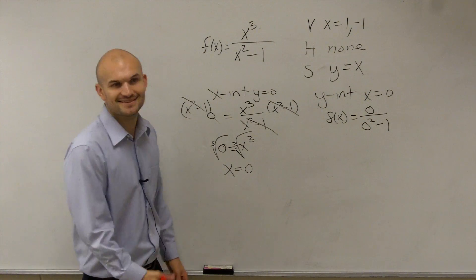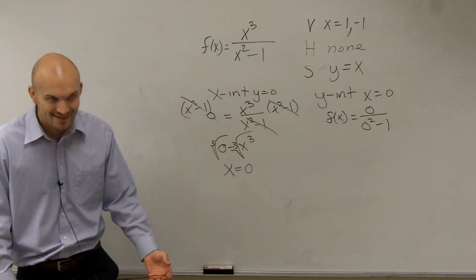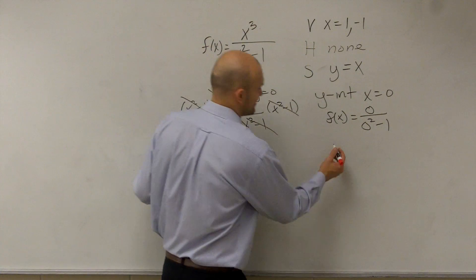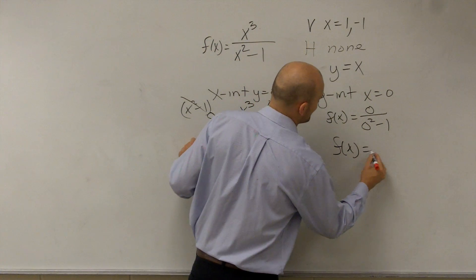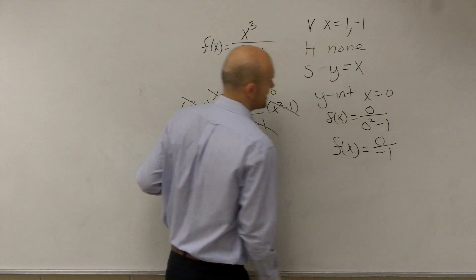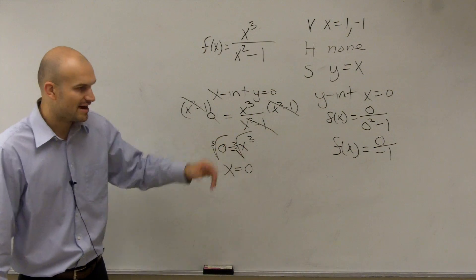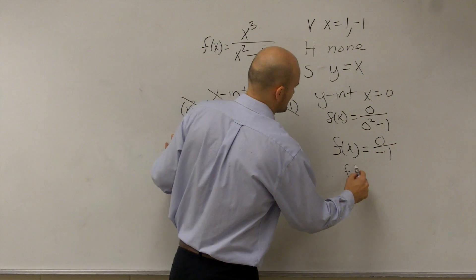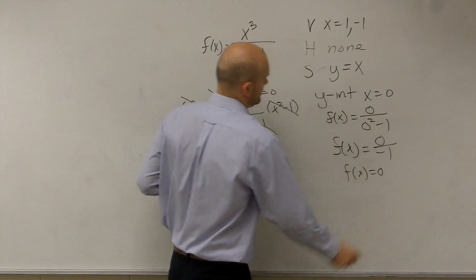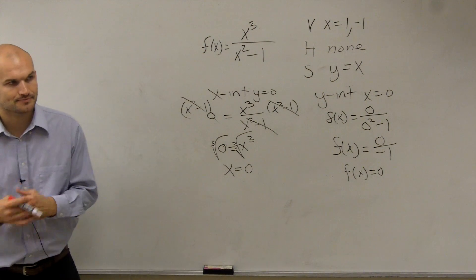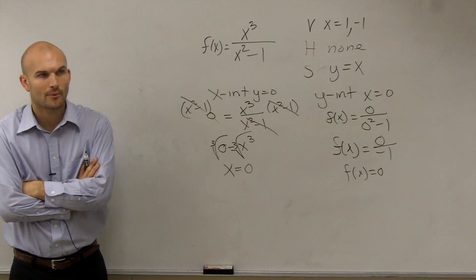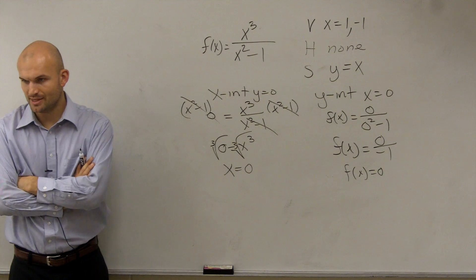So therefore, the x intercept is x equals 0. Then, over here, we have f of 0 equals 0 divided by negative 1. 0 divided by negative 1 is going to be 0.